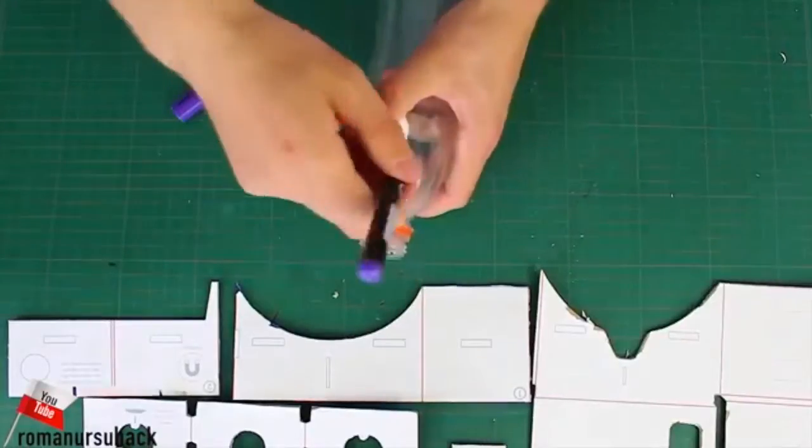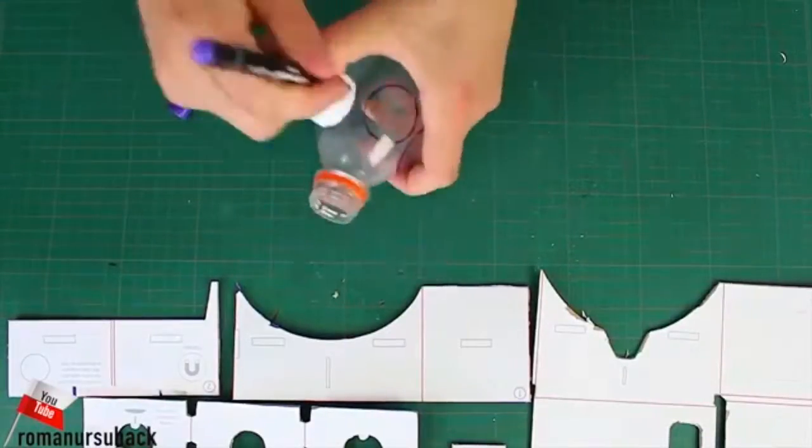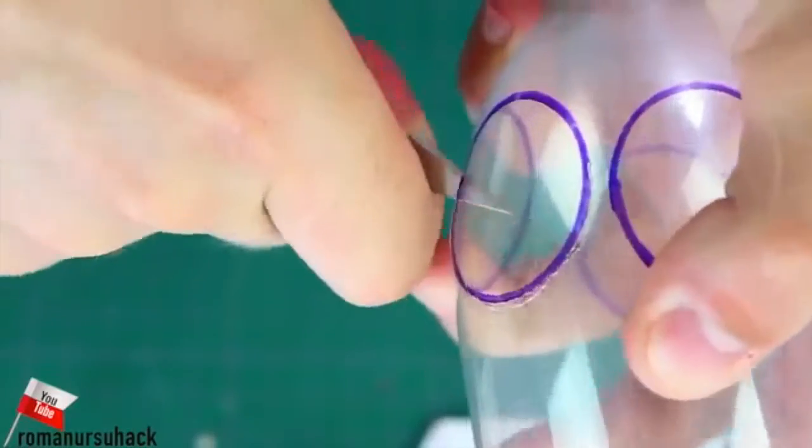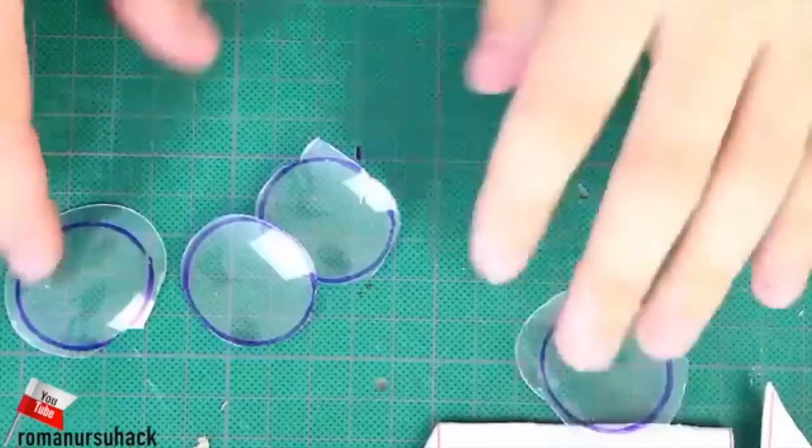Now it's time to make the lenses. Since it's a DIY project, we will need DIY lenses as well. We will use a plastic cap. Let's place the cap onto the shoulder of the bottle and trace the cap around it.